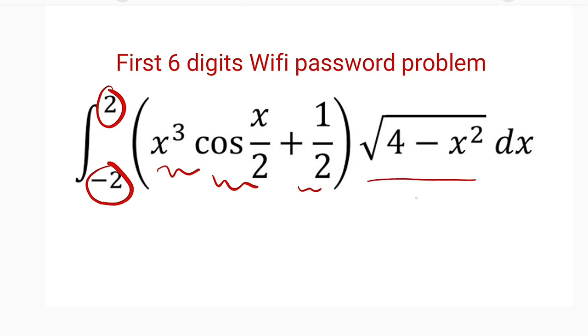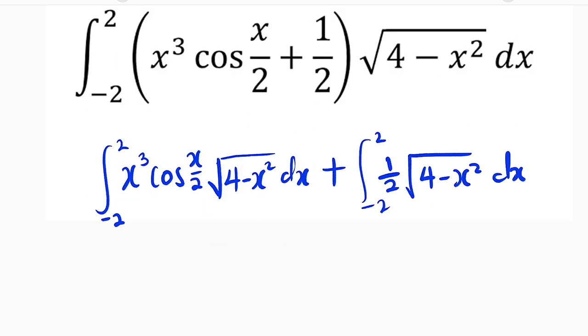First of all, let us distribute square root of 4 minus x squared over these parentheses. I have just distributed square root of 4 minus x squared over the parentheses. And we have two separate integrals. Let us concentrate on the first one.